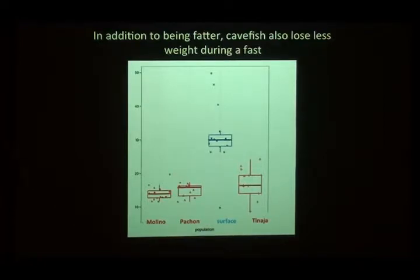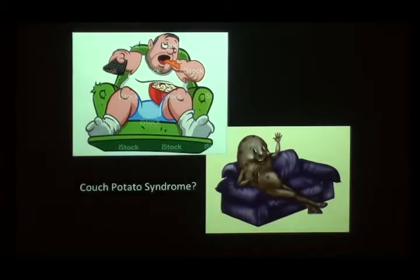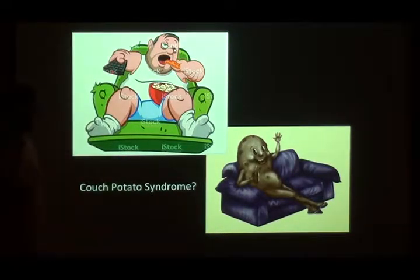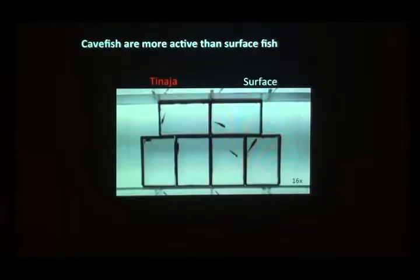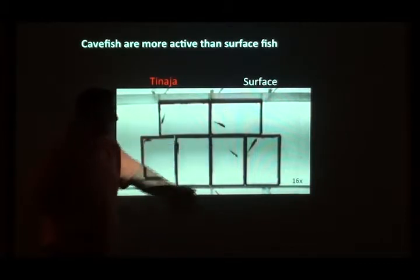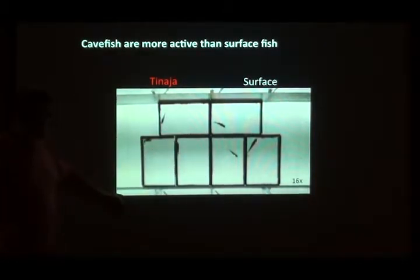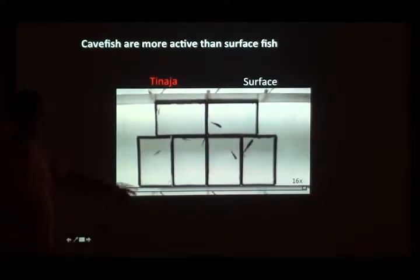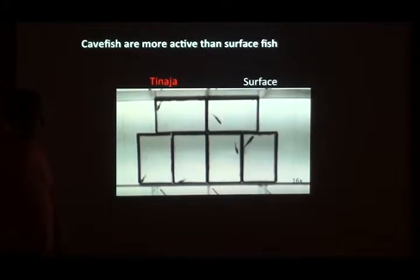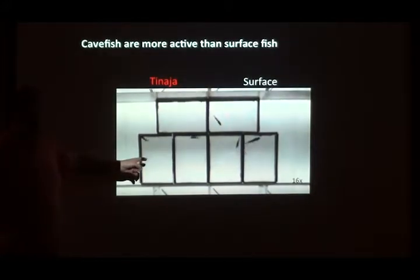How do they do that? One might think maybe they just don't move around — the couch potato strategy. But looking at cave fish versus surface fish, the cave fish are actually moving much more rapidly. Ecologically that makes sense: in rivers there are predators, so you hide until you see food. In the cave there are no predators, and so little food that you have to constantly search for it. So these fish are getting fatter while exercising more — there must be metabolic differences.